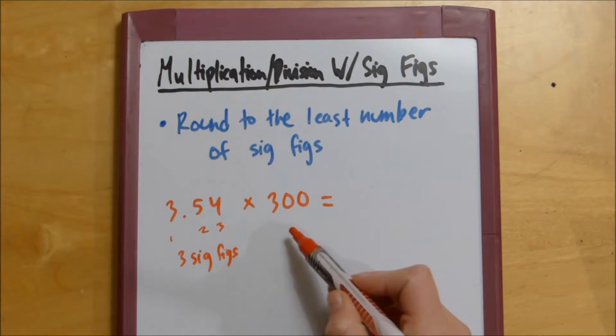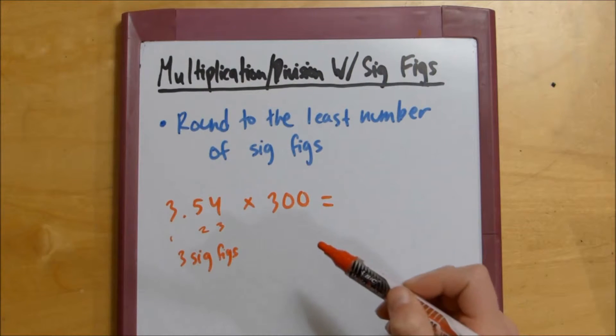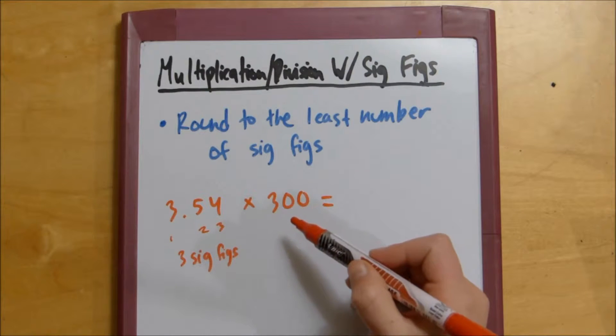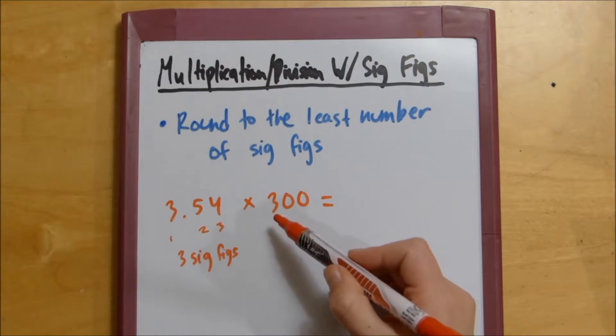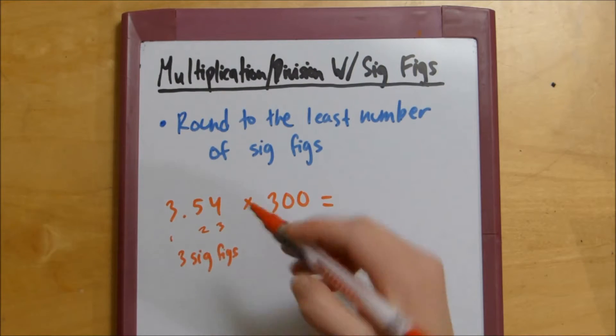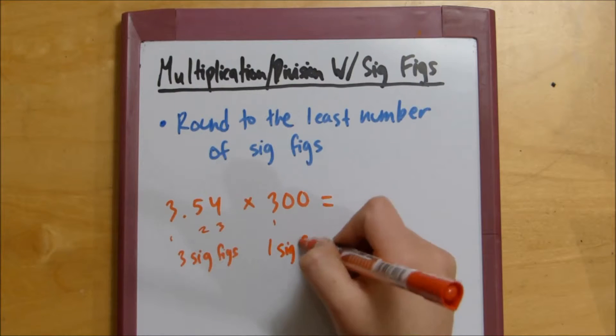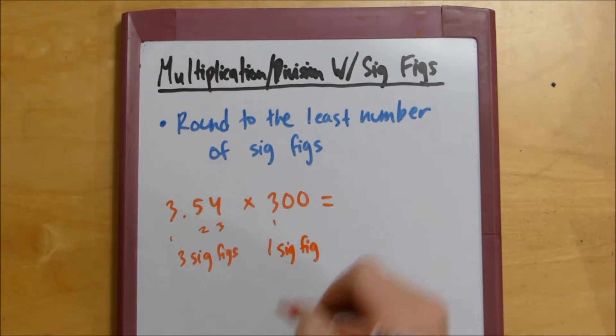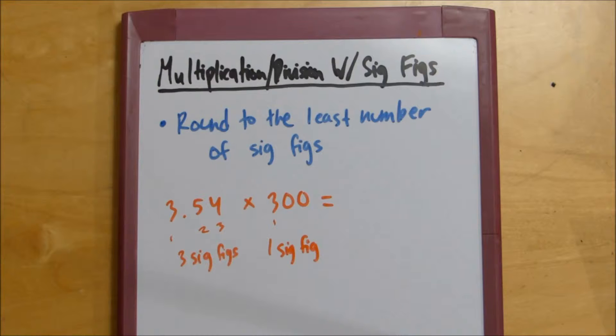And then with numbers that don't have decimal points, we count off from the rightmost non-zero number, which would be 3. So we just have 1 sig fig here.